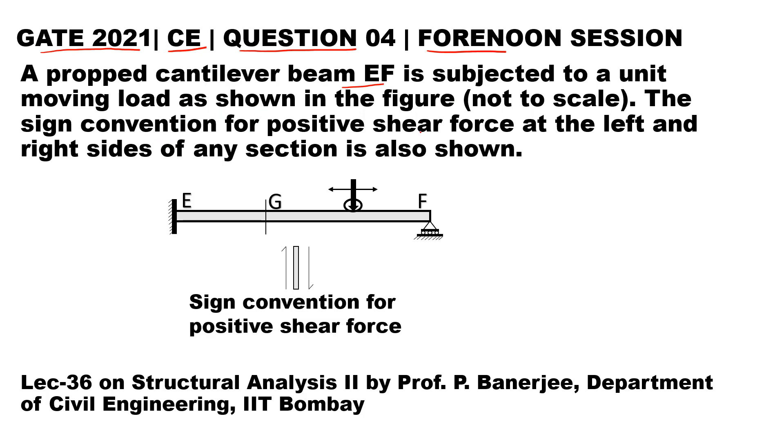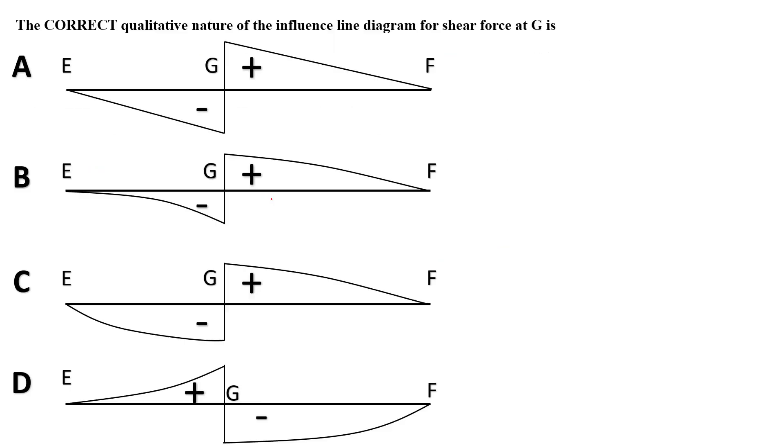The sign convention for the positive shear force at the left and the right side of any section is also shown. This figure is given and we have to draw the ILD for shear force at section G. The following are the four options out of which one is correct and we have to find that out.